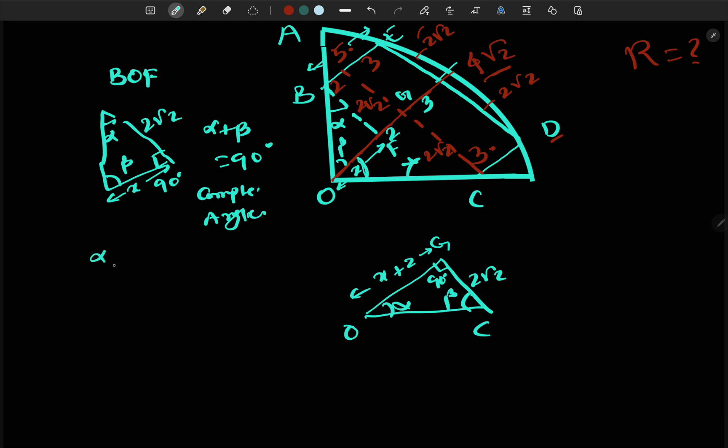We will see one of the angles is alpha in BOF triangle, and similarly in triangle GOC also we have alpha angle. One of the angles is beta, here also we have beta. Other angle is 90 degrees and 90 degrees. So from angle-angle-angle similarity, we can say BOF is similar to triangle GOC.